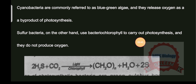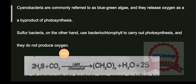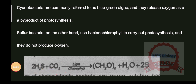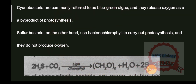Sulfur bacteria, on the other hand, use Bacteriochlorophyll to carry out photosynthesis and do not produce oxygen. Instead, they produce sulfur. The source of hydrogen is hydrogen sulfide, which they use instead of water. The source of carbon is carbon dioxide. So hydrogen sulfide and carbon dioxide are reactants for photosynthesis in sulfur bacteria, along with Bacteriochlorophyll, and they manufacture sugar and release sulfur.